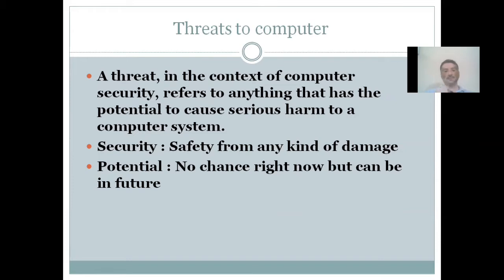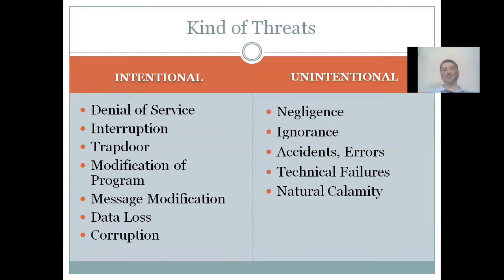When we say a person has great potential, we mean that currently the person doesn't seem to be doing much in a particular area, but given the right environment, they will excel. Similarly, a threat or harmful code may not be active right now, but it can become harmful if the right environment persists. Threats can be classified into two kinds: intentional and unintentional.